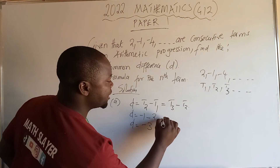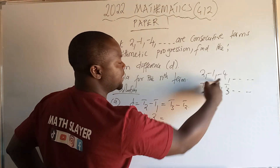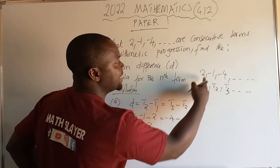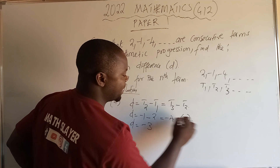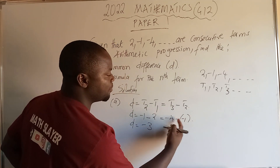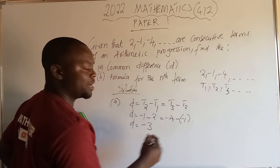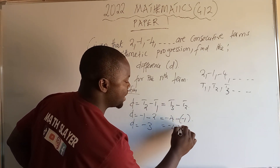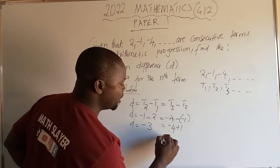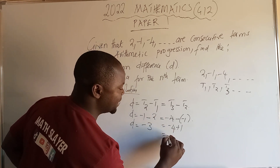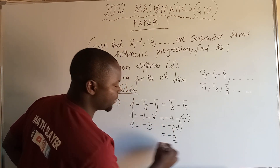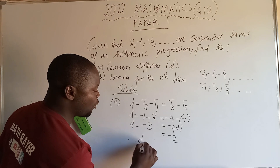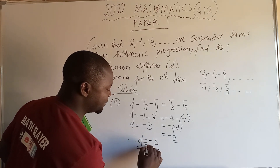Let's verify: T3 minus T2 is negative four minus negative one. That gives us negative four plus one, which is negative three. Therefore, the common difference is negative three.